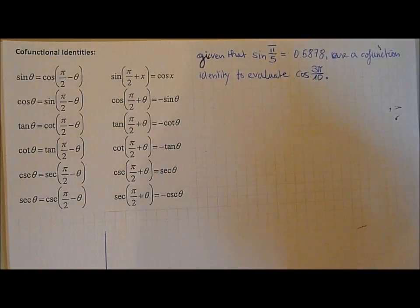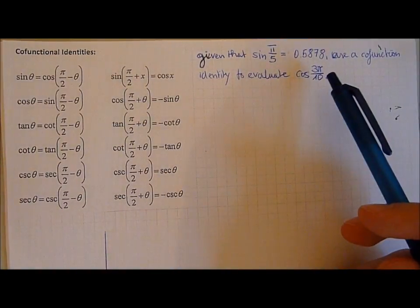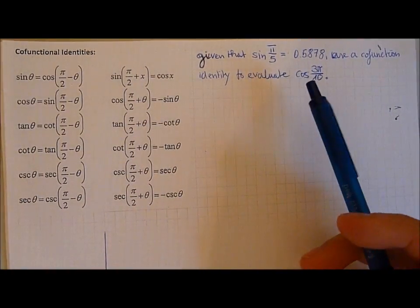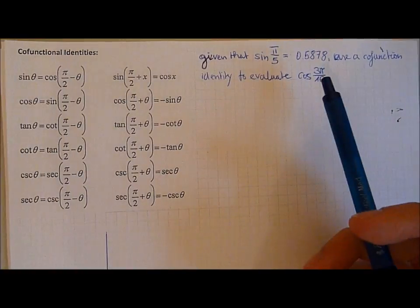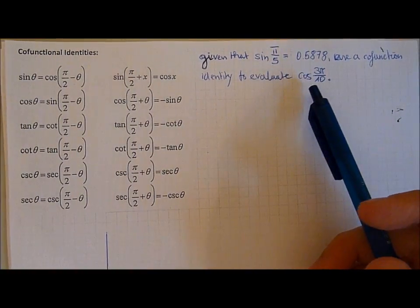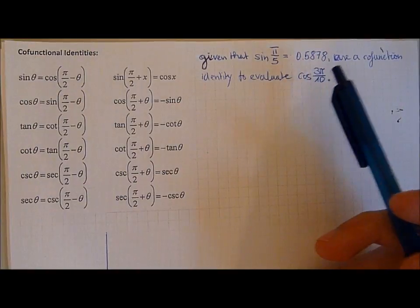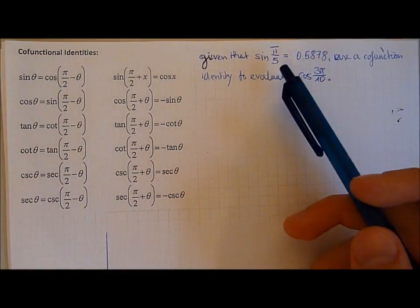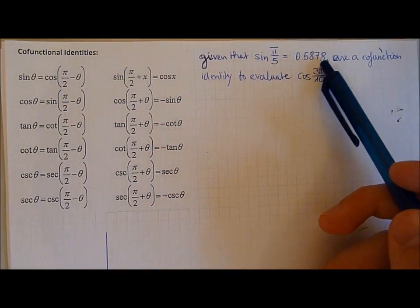So for example here we are asked to convert cos into sin pi over 5 because we have to show the value of cos 3 pi over 10 and to do that we have to convert into sin pi over 5 which we have the value for.